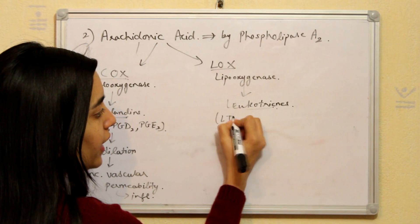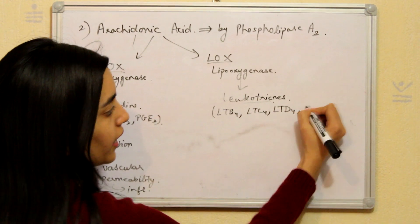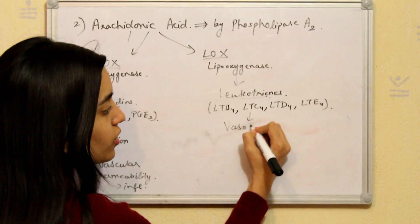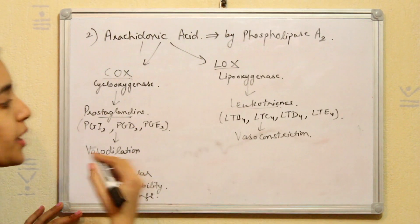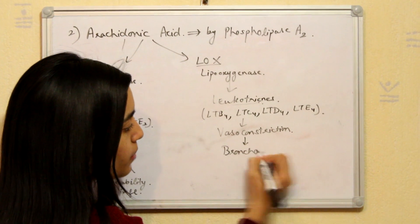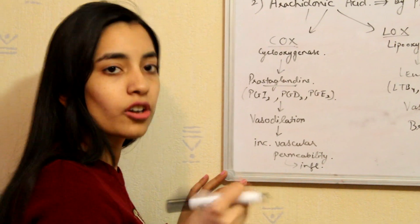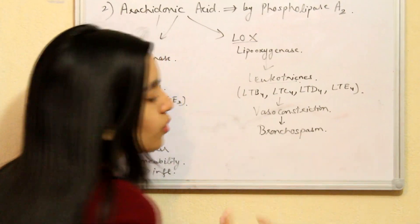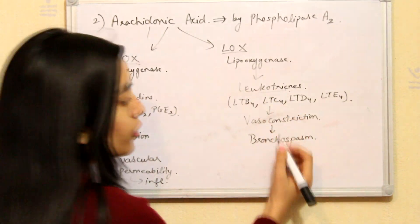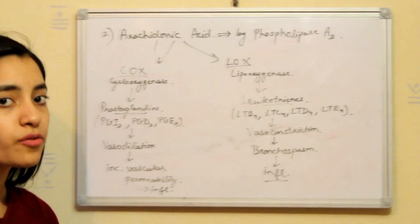To be specific LTB4, LTC4, LTD4 and LTE4. These leukotrienes cause vasoconstriction as opposed to vasodilation by COX enzyme. This vasoconstriction results in bronchospasm. Because the muscles of the bronchioles are contracted so it will cause bronchospasm. So when the blood vessel is contracted, that is narrowed down, so the overproduction of leukotrienes will be accumulated inside it and it will cause inflammation.